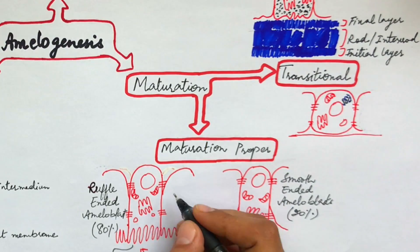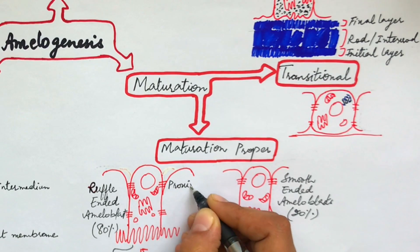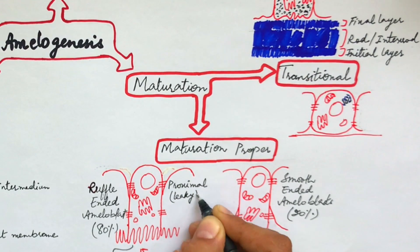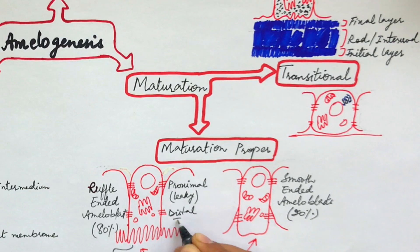The ruffle-ended ameloblasts have distal tight junctions and proximal leaky junctions, while smooth-ended ameloblasts are completely opposite, having a leaky distal junction and a tight proximal junction.